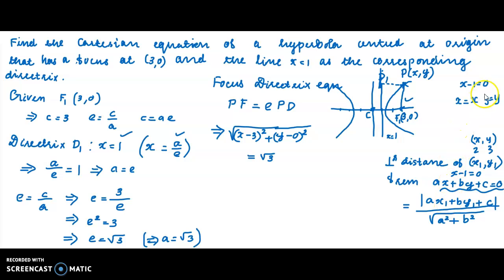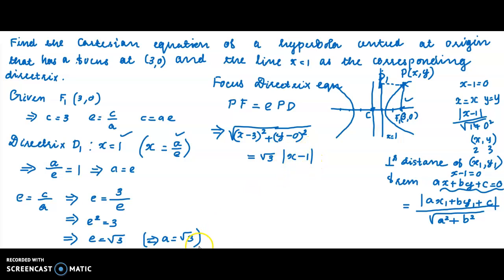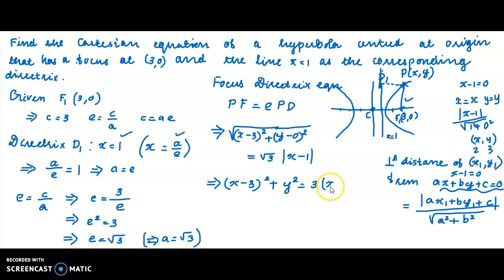Substituting: the modulus gives |x − 1|, and squaring both sides: (x − 3)² + y² = 3 × (x − 1)². The √3 squared gives 3, so we have x² − 6x + 9 + y² = 3(x − 1)².